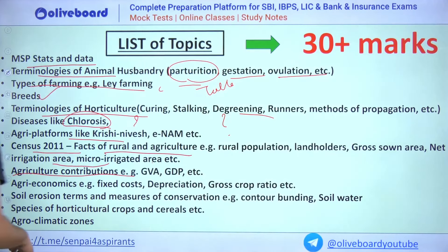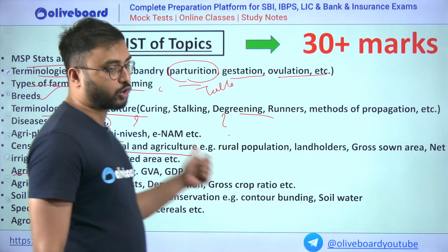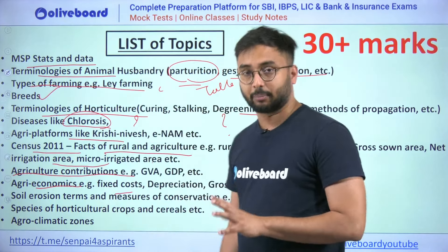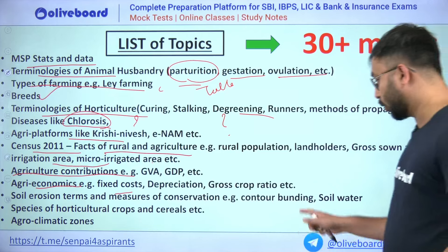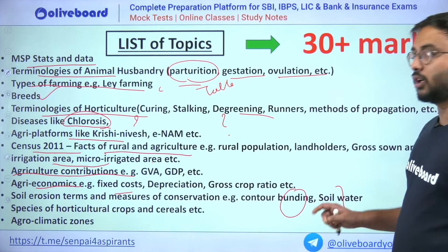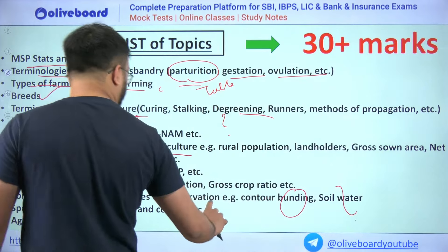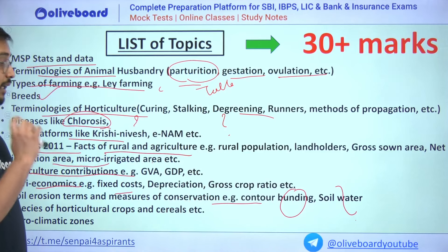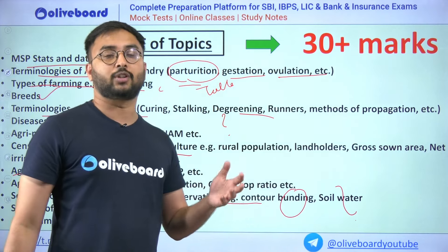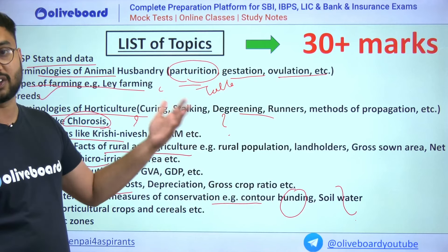Agricultural contributions to GVA and GDP — know the contribution percentage for this year. For agri-economics: fixed cost depreciation and gross crop ratio are important topics. Soil erosion terms such as contour bunding and terrace farming can be directly asked, and in-depth details may also be required — for example, what is the slope percentage for contour bunding or terrace farming?